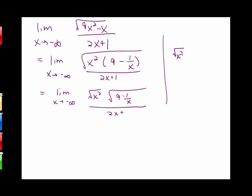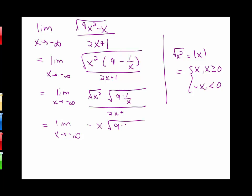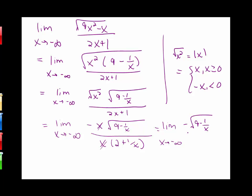Again, √(x²) equals the absolute value of x. Since we're going to negative infinity, |x| = −x. So we have −x times √(9 − 1/x) all over 2x plus 1. Factoring x out of the denominator gives x times (2 + 1/x), the x's cancel, and we get the limit as x goes to negative infinity of −√(9 − 1/x) over (2 + 1/x). Since 1/x approaches 0, the limit equals −√9 over 2, which is −3/2.